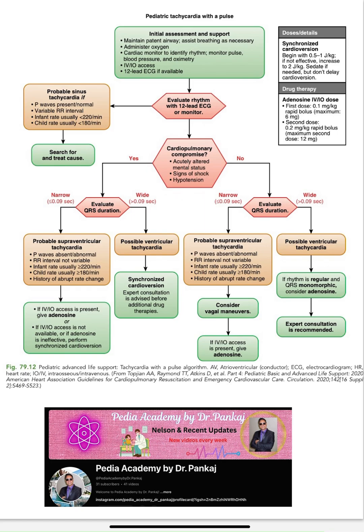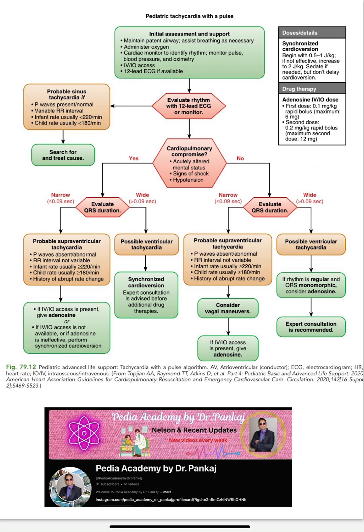If there is no cardiovascular compromise, assess QRS duration. If it is narrow complex — less than 0.09 seconds — it is generally PSVT; perform vagal maneuver and if required give adenosine. If it is wide complex — 0.09 seconds or more — and the patient is stable, it is possibly ventricular tachycardia.